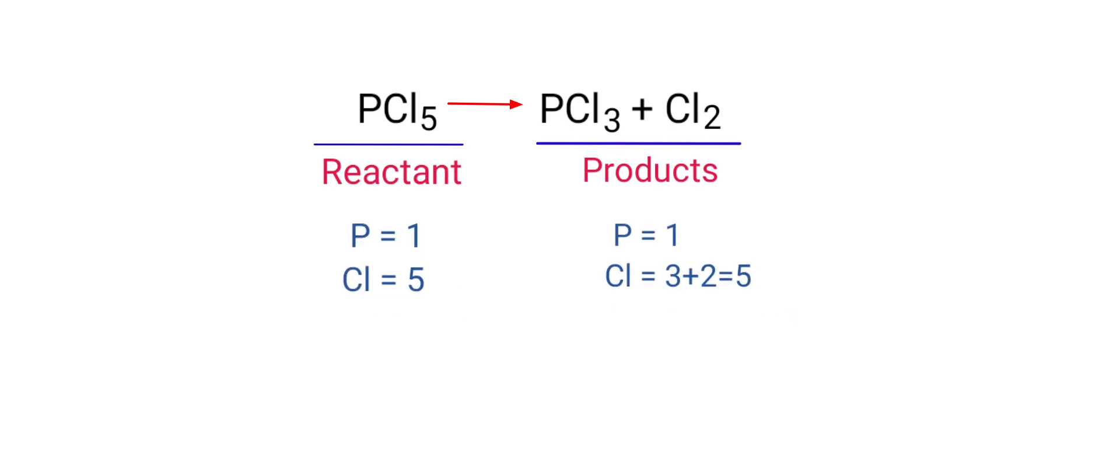If you observe this equation, the number of atoms at the reactant's side are same as the number of atoms at the product's side. There are 1 Phosphorus atom and 5 Chlorine atoms on both sides. So we don't need to balance this equation because this equation is already balanced.